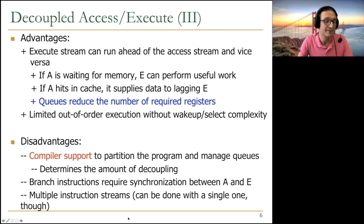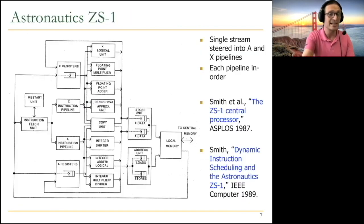The other disadvantage is multiple instruction streams. Basically, you need to generate two instruction streams or program two instruction streams, which may be cumbersome. But later work showed that this can be done with a single one by taking the single instruction stream and steering it dynamically into multiple processors. And this is an example, basically. This is the Astronautics ZS-1 processor.